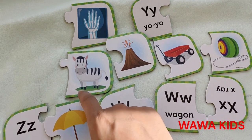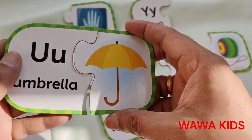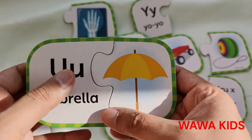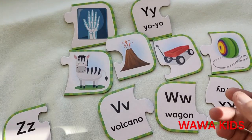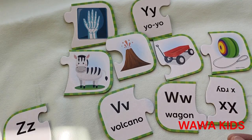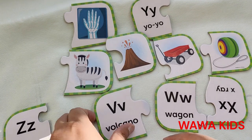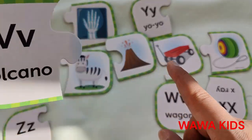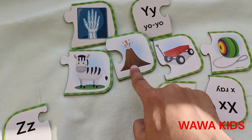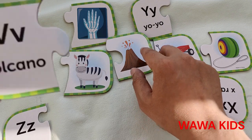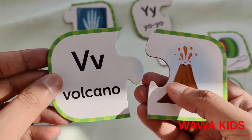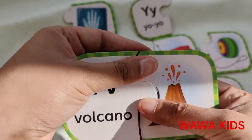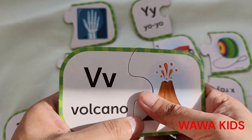U. Umbrella. U for Umbrella. V. Volcano. V for Volcano.